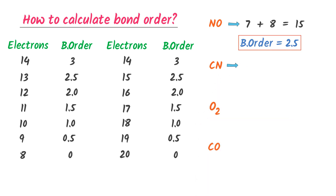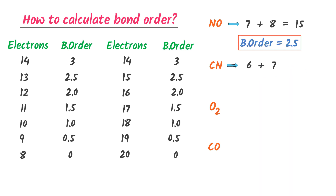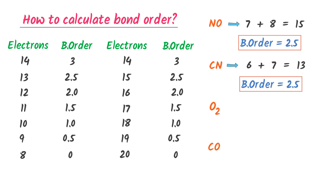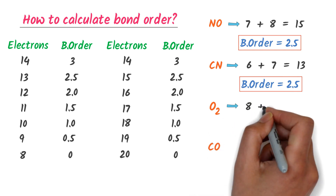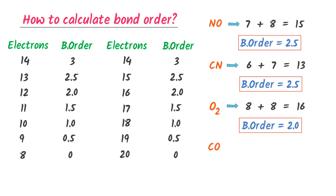Secondly, there are 6 electrons in carbon plus 7 electrons in nitrogen, so we get 13 electrons. When there are 13 electrons, the bond order is 2.5. So the bond order of this molecule is 2.5. Thirdly, there are 2 atoms of oxygen, so 8 plus 8 equals 16. When there are 16 electrons, the bond order is 2.0. So the bond order of this molecule is 2.0.